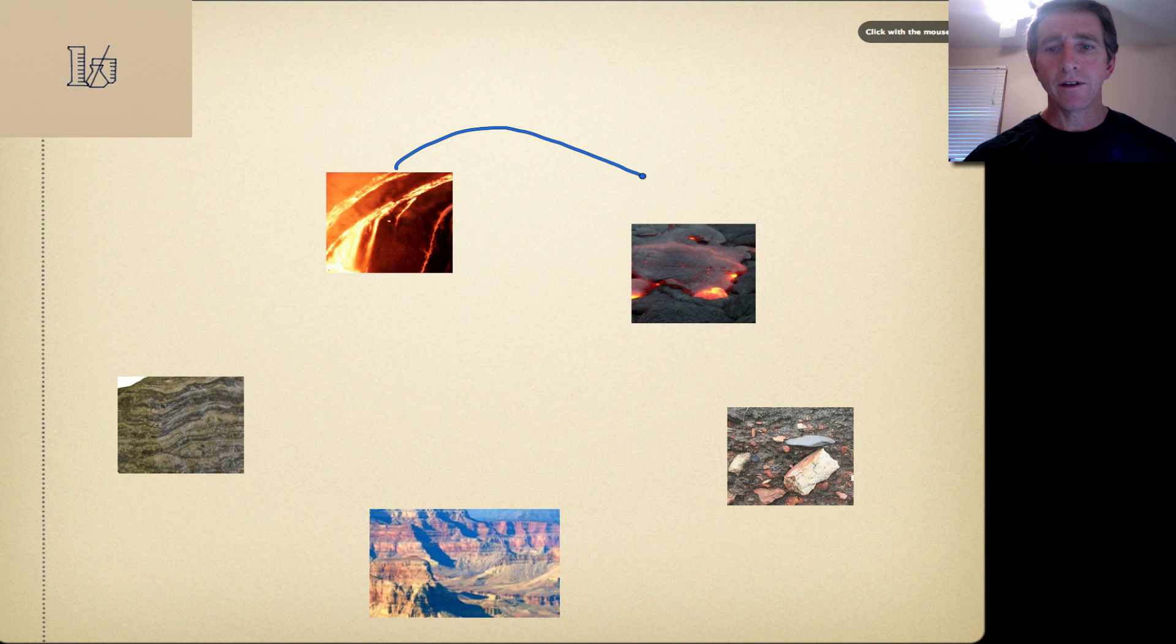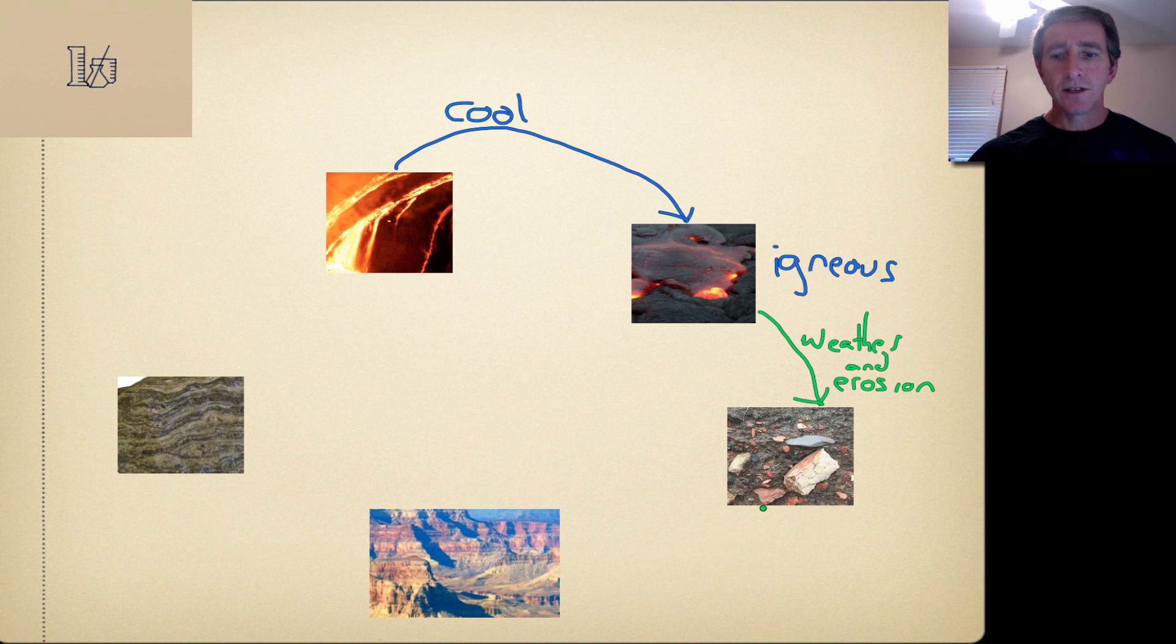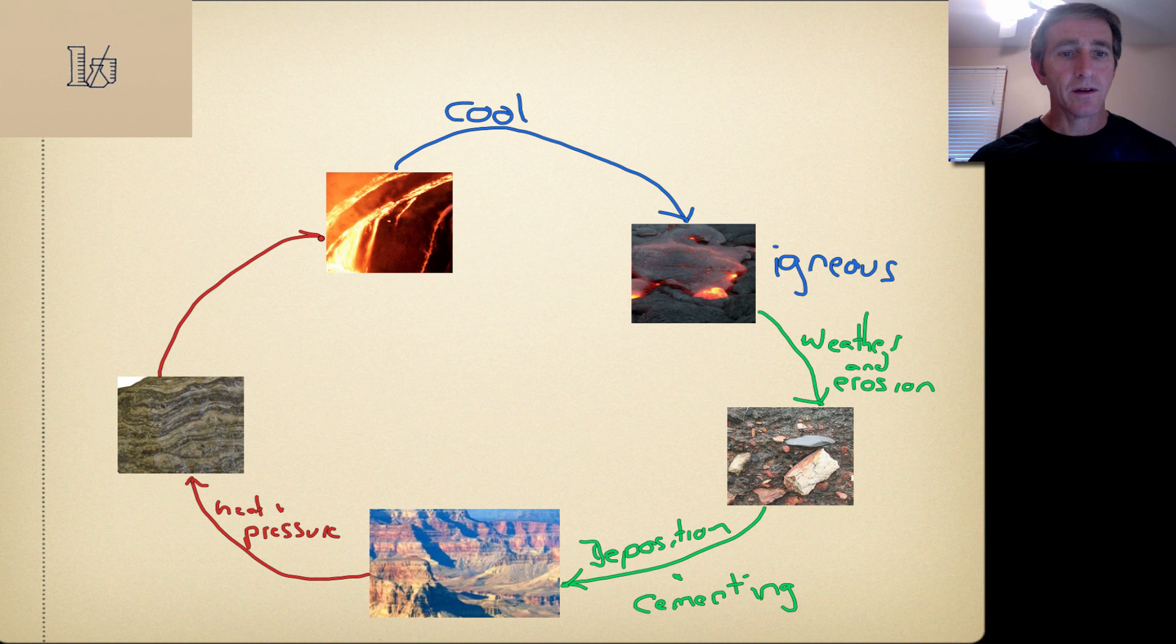Magma and lava can cool to become igneous rock. Igneous rock can be weathered and eroded to become sediments. Sediments can be deposited and cemented to become sedimentary rock. Sedimentary rock can have heat and pressure applied to become igneous rock. And igneous rock can be melted to become magma.